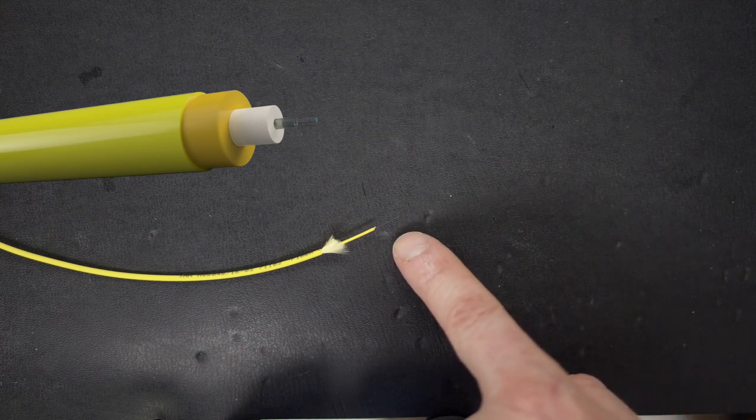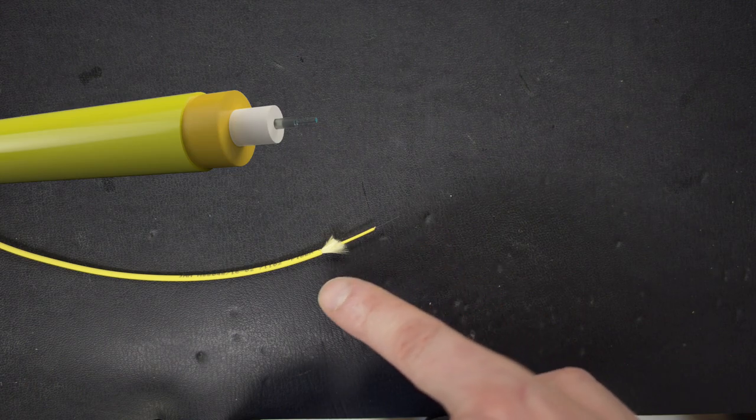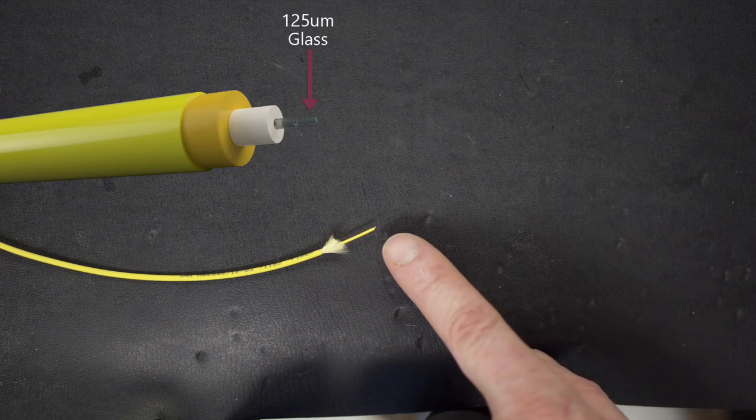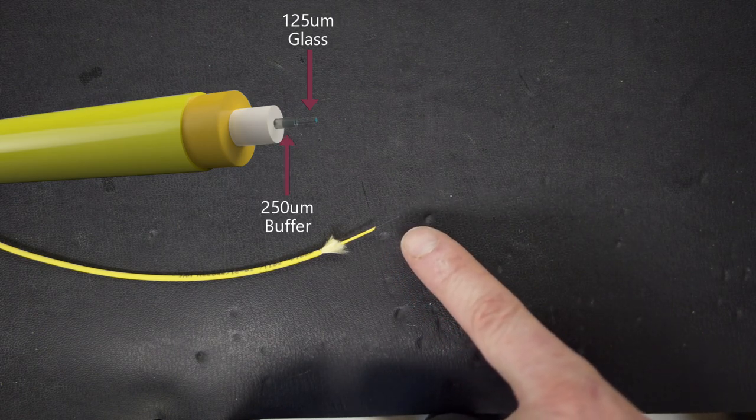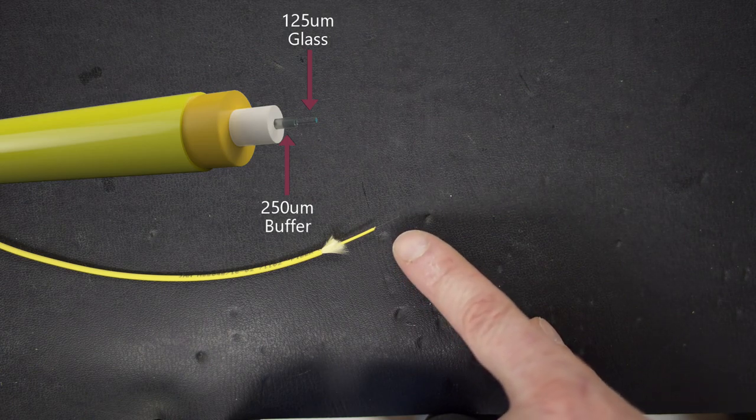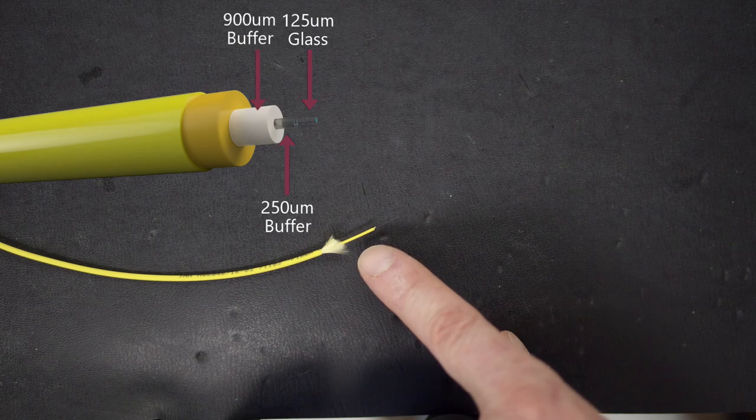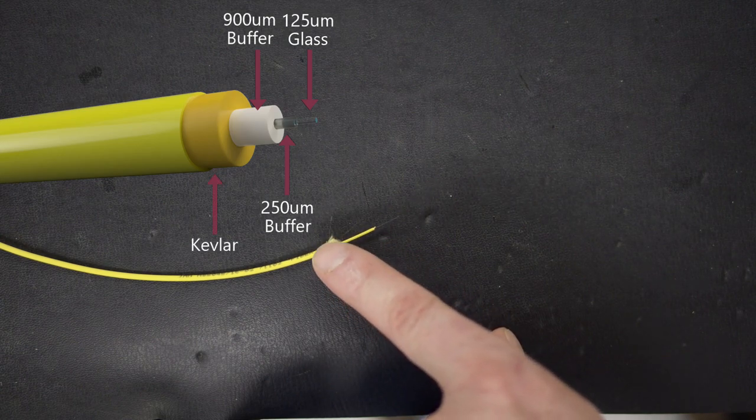This is a typical single fiber cable in that it has a single fiber optic strand running through the center of it. The 125 micron diameter glass will have a 250 micron buffer around it, just like bare fiber. Around that, there is a 900 micron plastic buffer that adds an additional layer of protection.